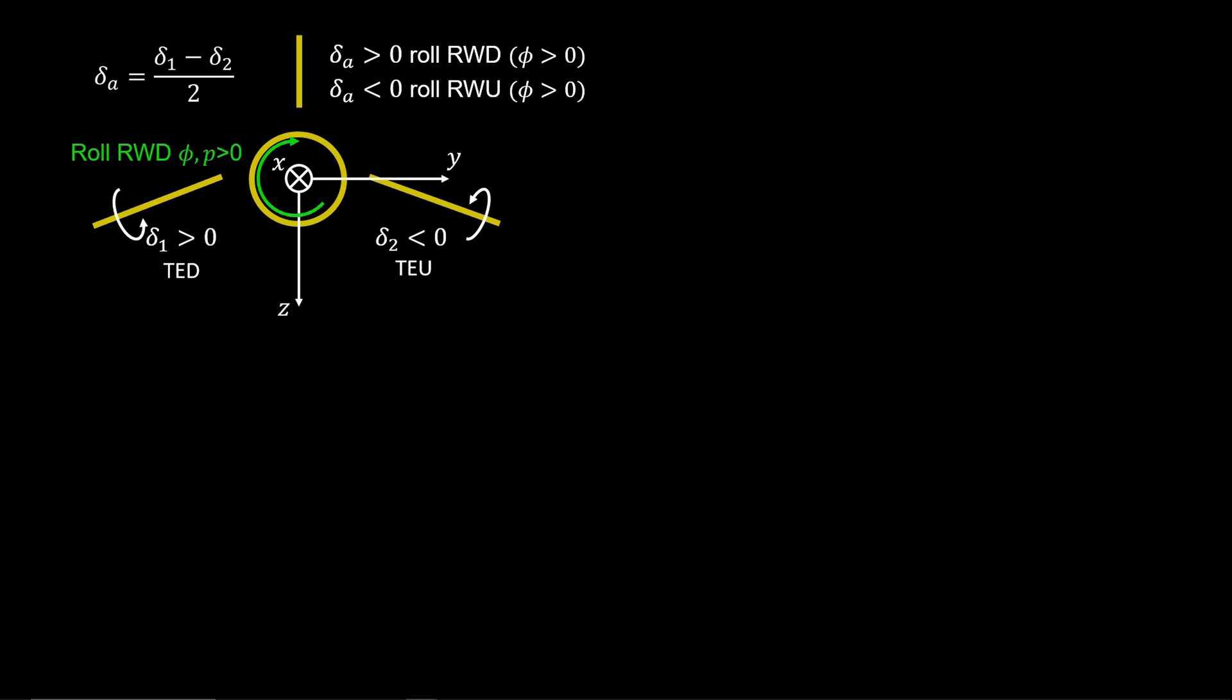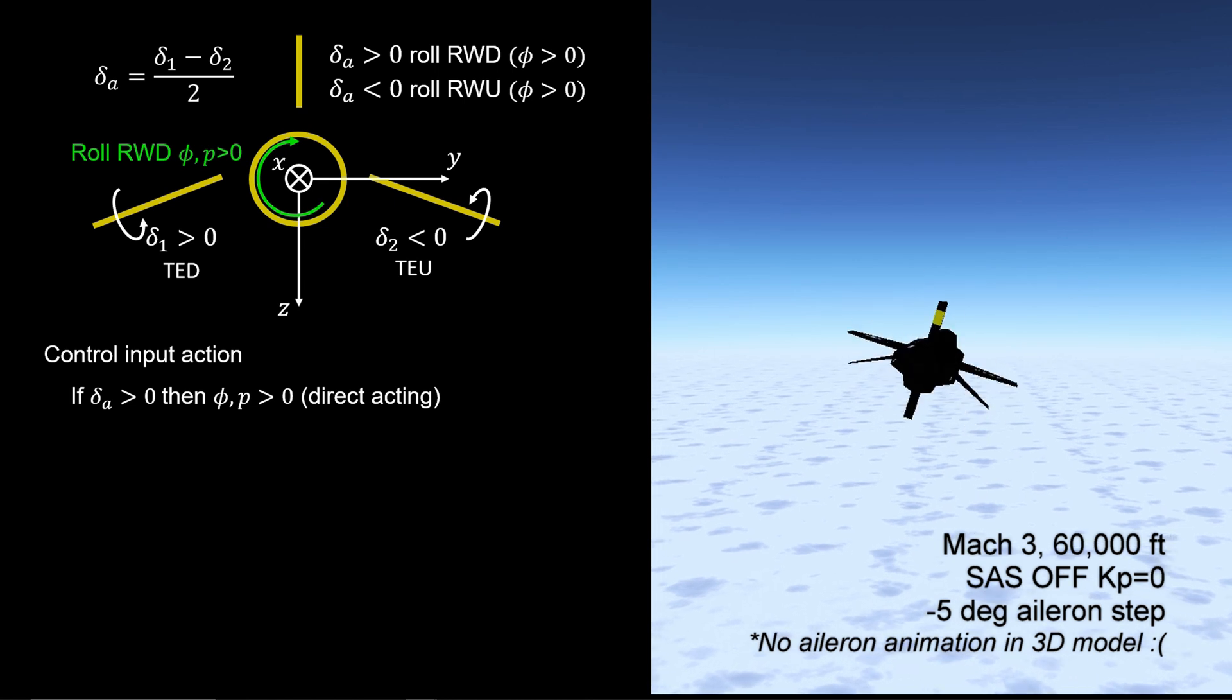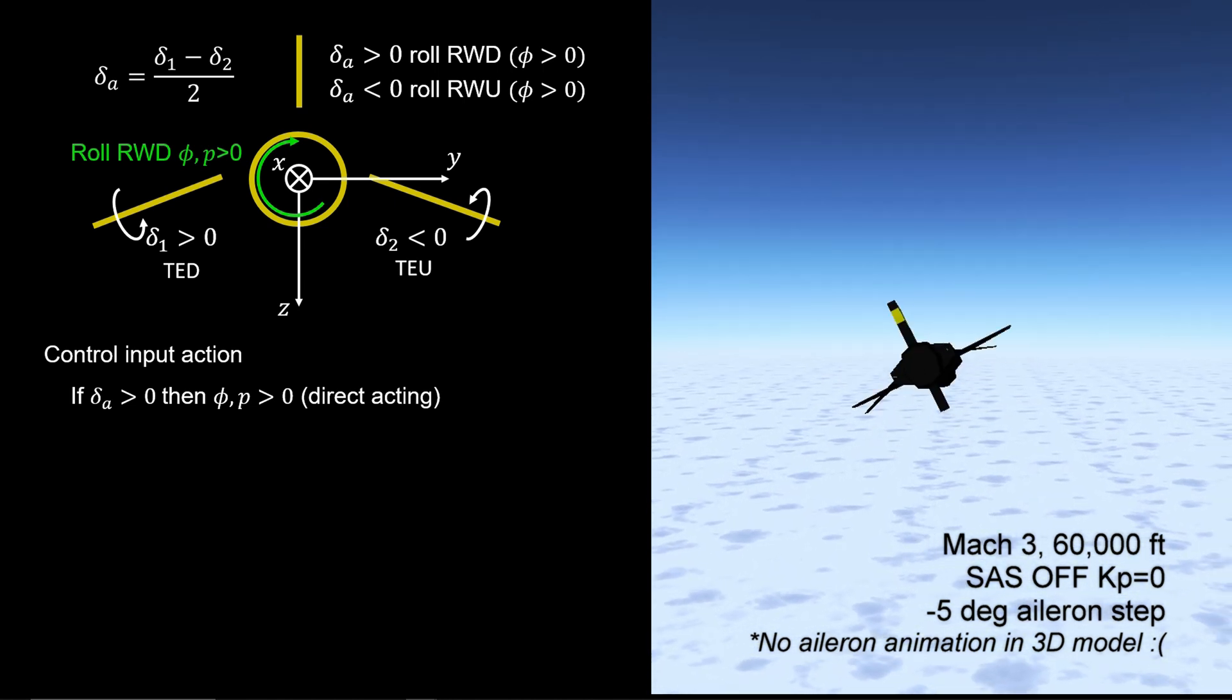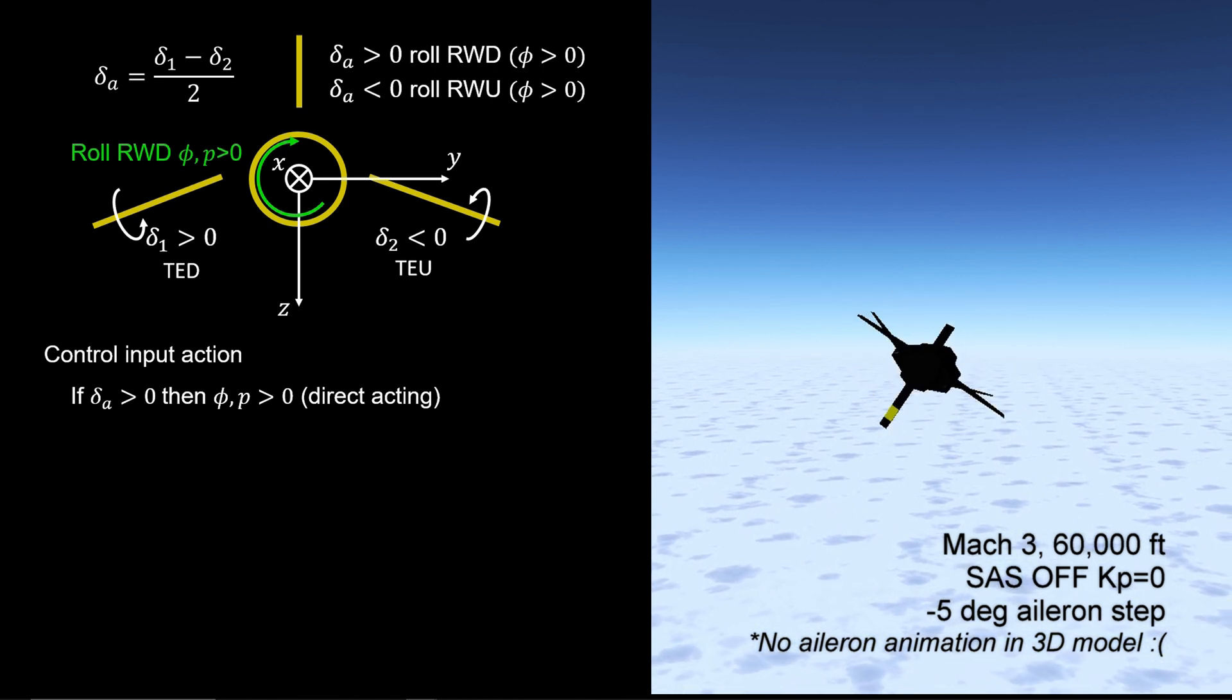This control input action is direct. This means that if del-A is positive, then roll angle and roll rate are positive, and vice versa as shown.